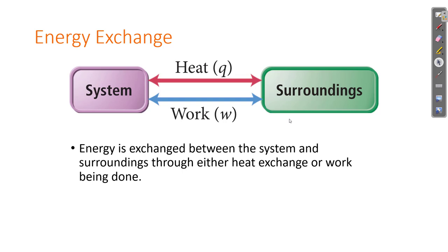The system and the surroundings can exchange energy in two ways: through heat — they can heat up and cool down — or through work. Work is when they move, like the water wheel. All the particles moving in the same direction makes the water wheel spin. That's an exchange of energy.